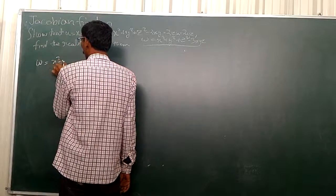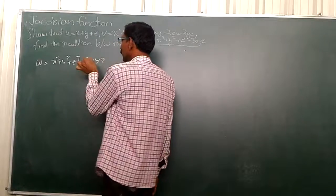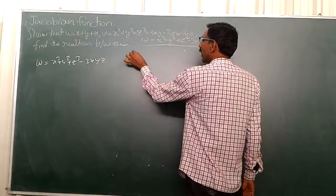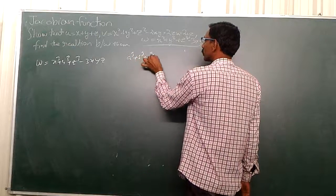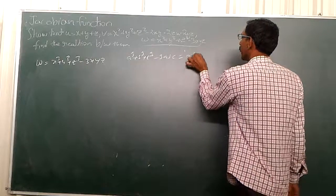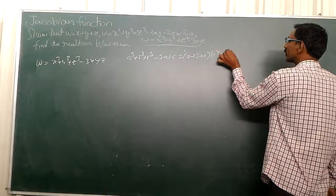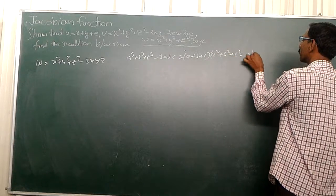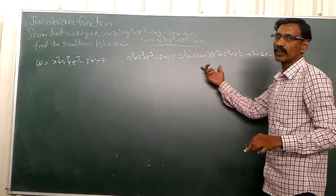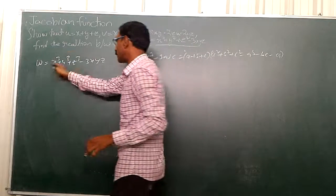w is equal to x cube plus y cube plus z cube minus 3xyz. In previous classes we already learned that a cube plus b cube plus c cube minus 3abc is equal to a plus b plus c into a square plus b square plus c square minus ab minus bc minus ca. This is called a special product.